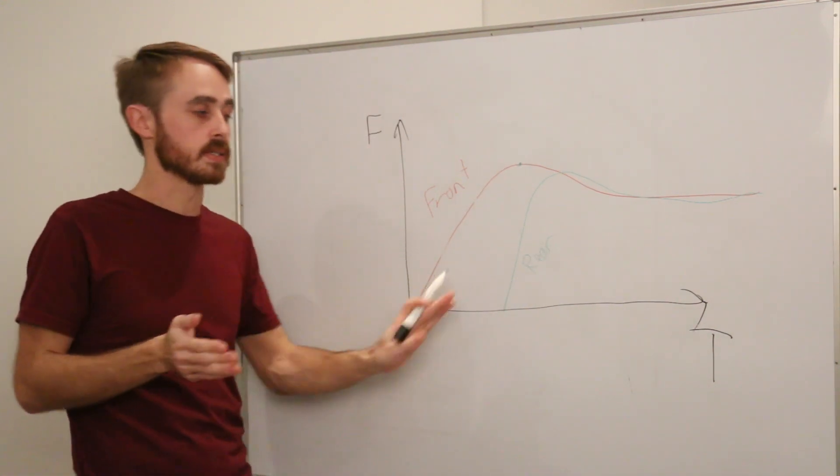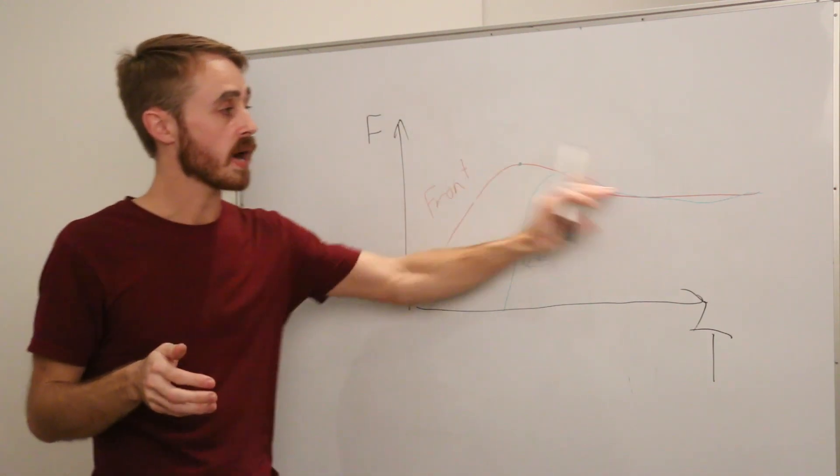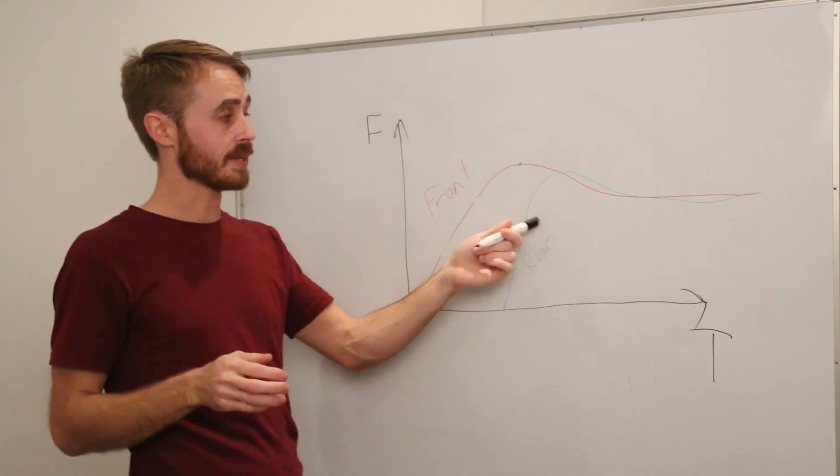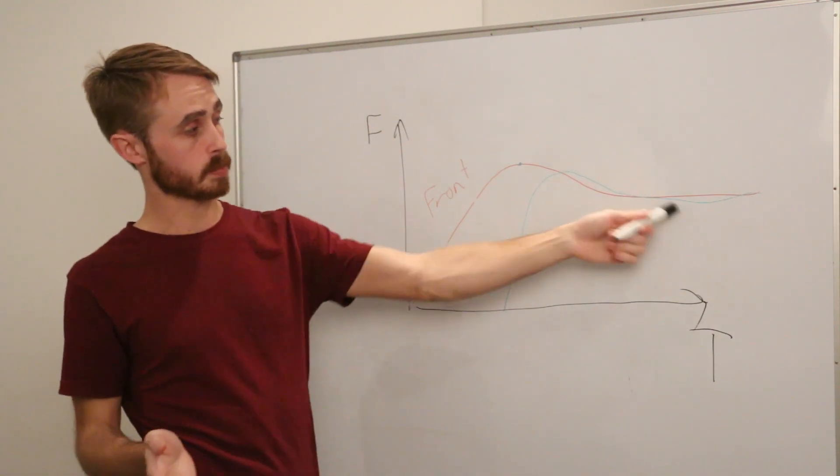The net result of this is that the rear actually has to get up to speed, so to speak, faster than the front. Now, this means that it needs a higher roll frequency to get up to speed.